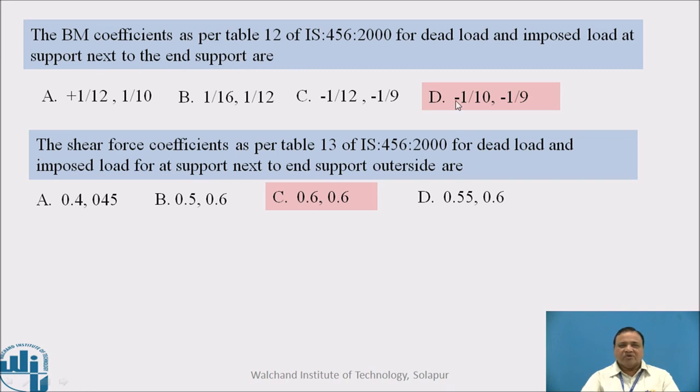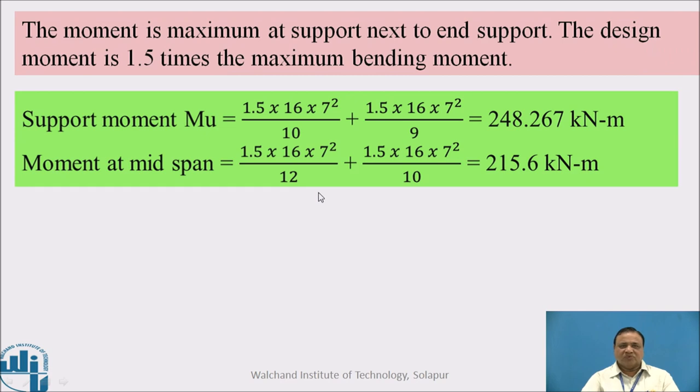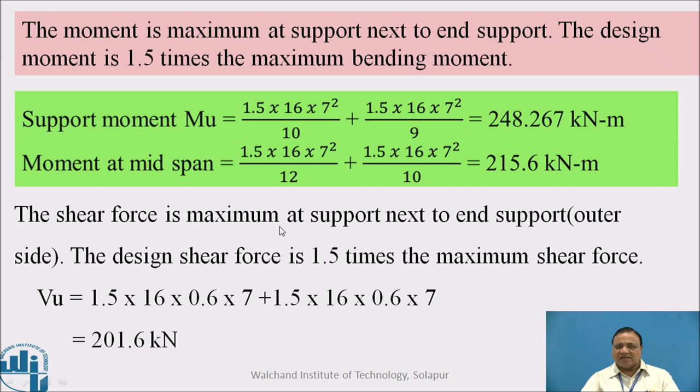This is the answer: For bending moment coefficient it is -1/10 for WD and -1/9 for WL, and for shear it is 0.6 for dead load and 0.6 for live load. The moment is maximum at the support next to end support. The design moment is 1.5 times the maximum bending moment. The shear force is maximum at the support next to end support on the outer side. The design shear is 1.5 times the maximum shear force. VU = 1.5 × 16 × 0.6 × 7 = 201.6 kN.